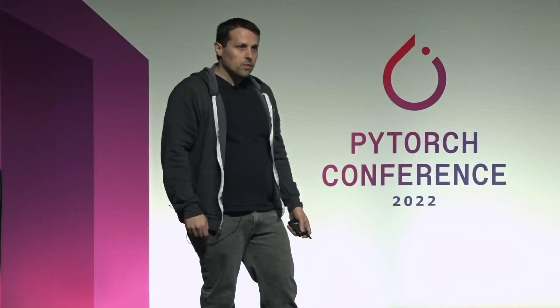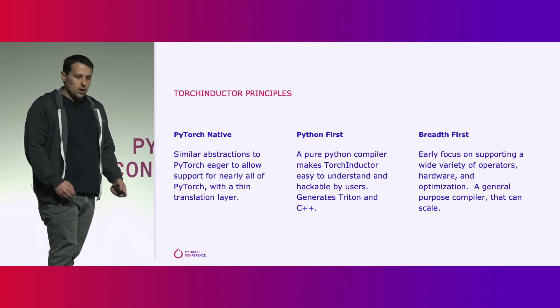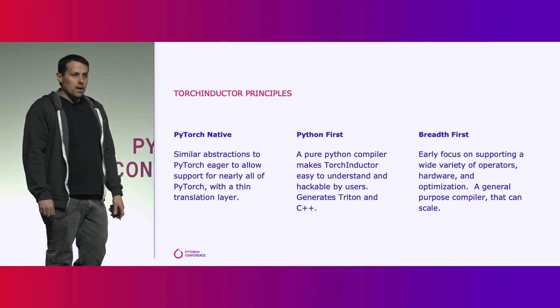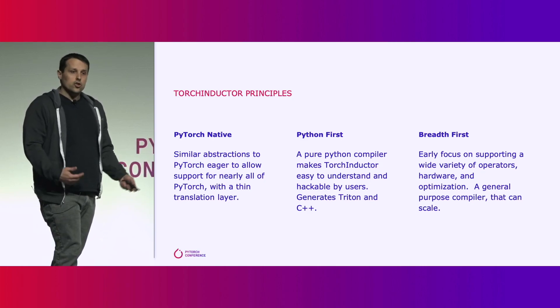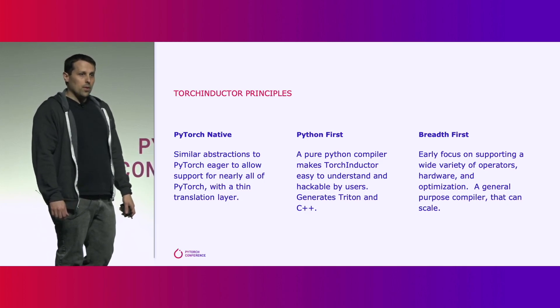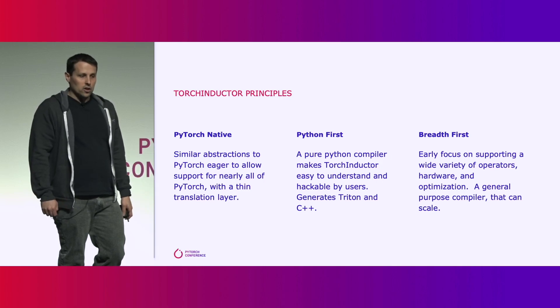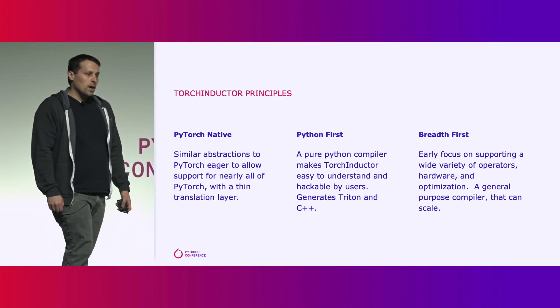When designing Torch Inductor, we started off with three key principles. The first principle is that Torch Inductor is PyTorch native, meaning Inductor uses very similar abstractions to PyTorch Eager, which allows it to faithfully capture all the behavior of PyTorch. The next key principle is Python first — with PyTorch 2, we are embracing Python, and part of that involves writing Inductor entirely in Python, which makes it much easier to hack on and extend. Finally, we wanted Inductor to be really general, so we focused on breadth rather than depth early on, tackling tricky operators and tricky optimizations early to ensure that our design was general and could scale.